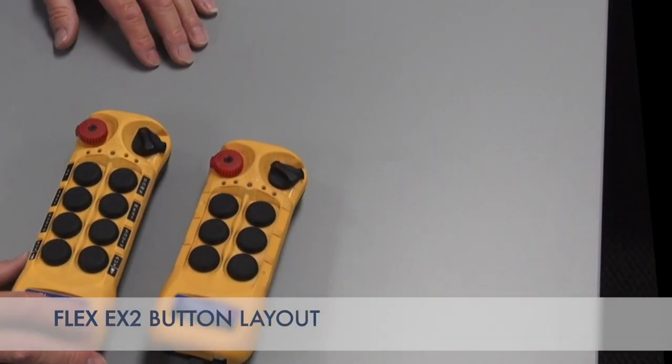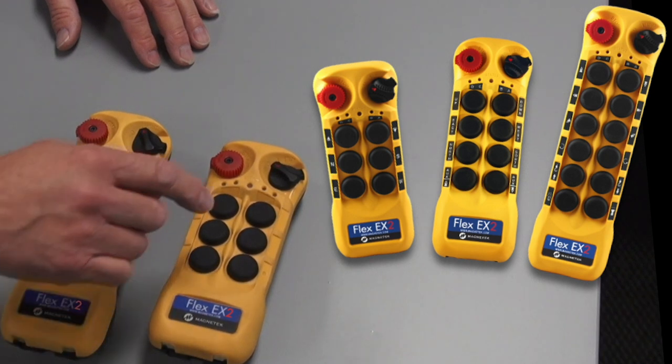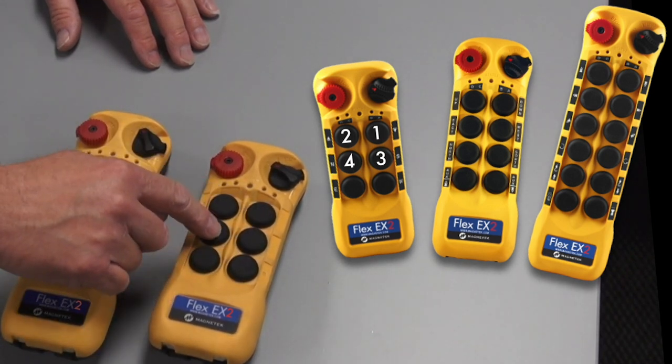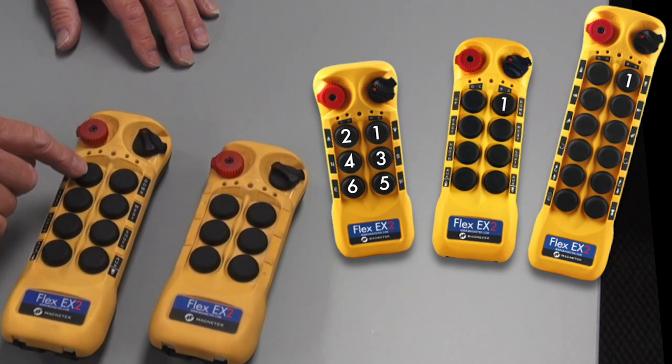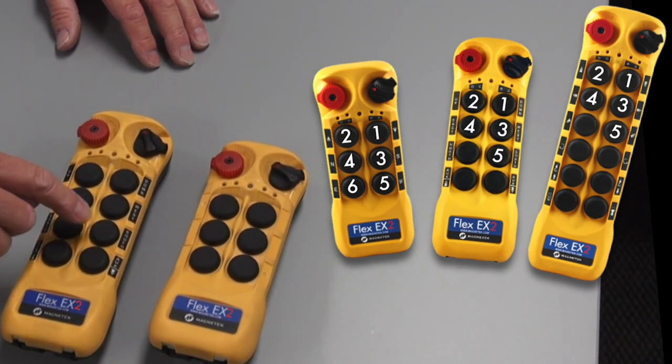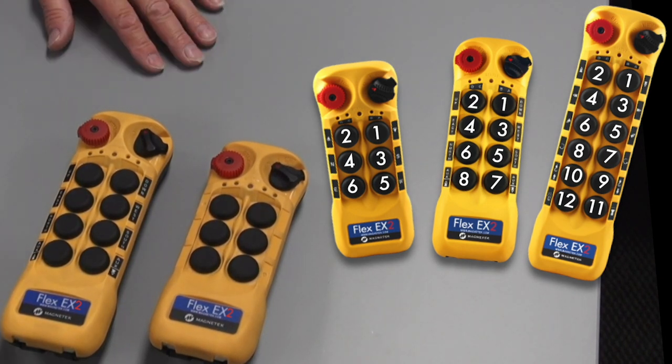So all Flex EX2 transmitters have a unique button arrangement. That would be 1, 2, 3, 4, 5, 6 in a 6-button station, 1, 2, 3, 4, 5, 6, 7, 8 in an 8-button station, and so on based on the transmitter that you have.